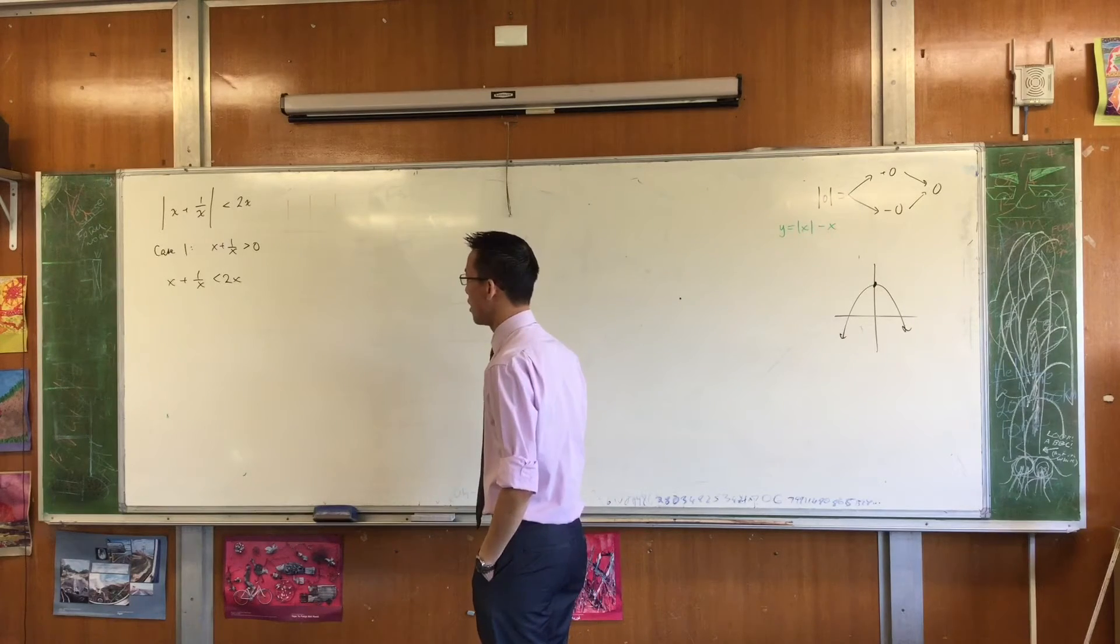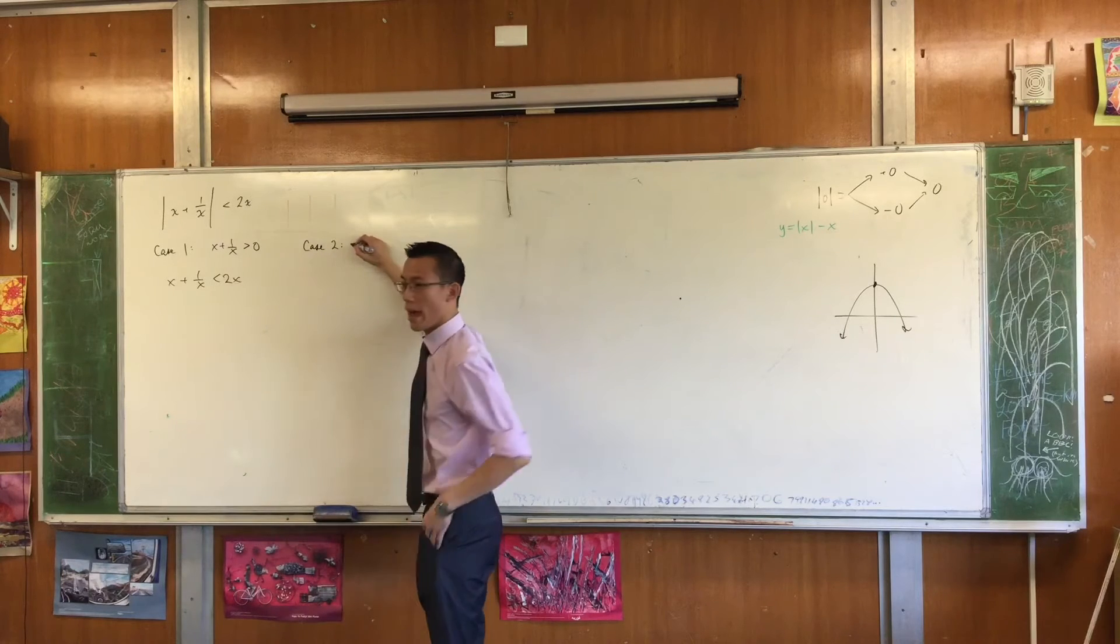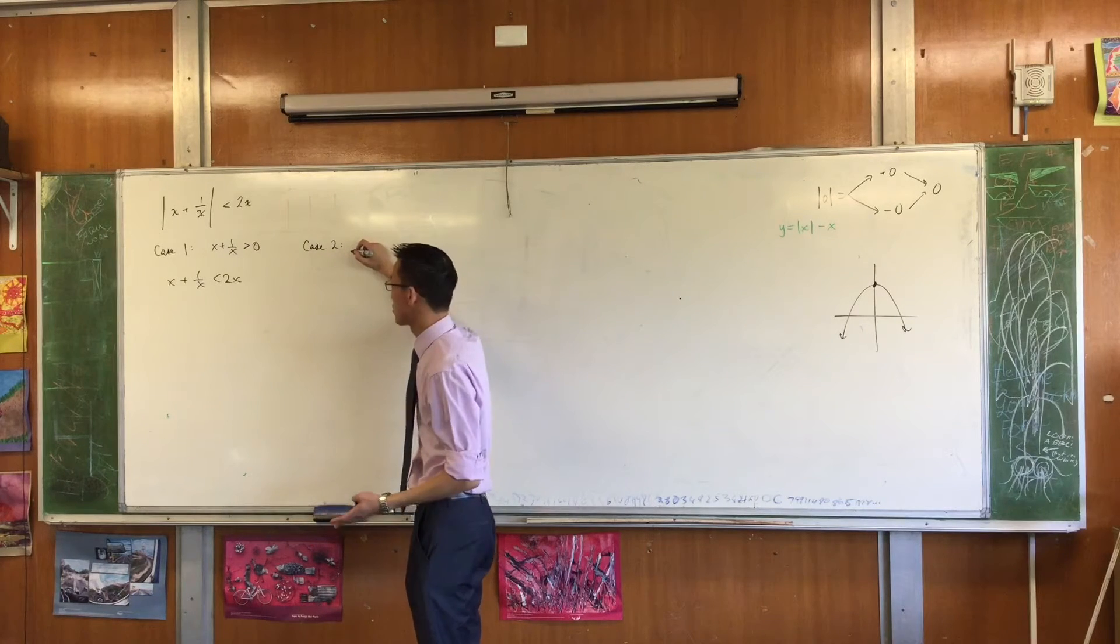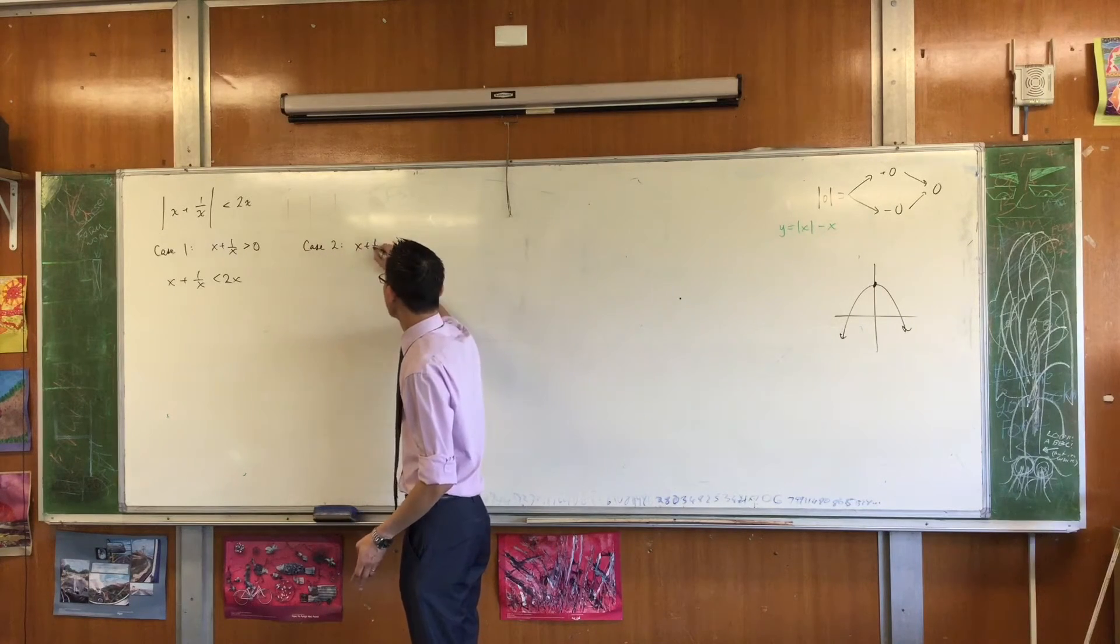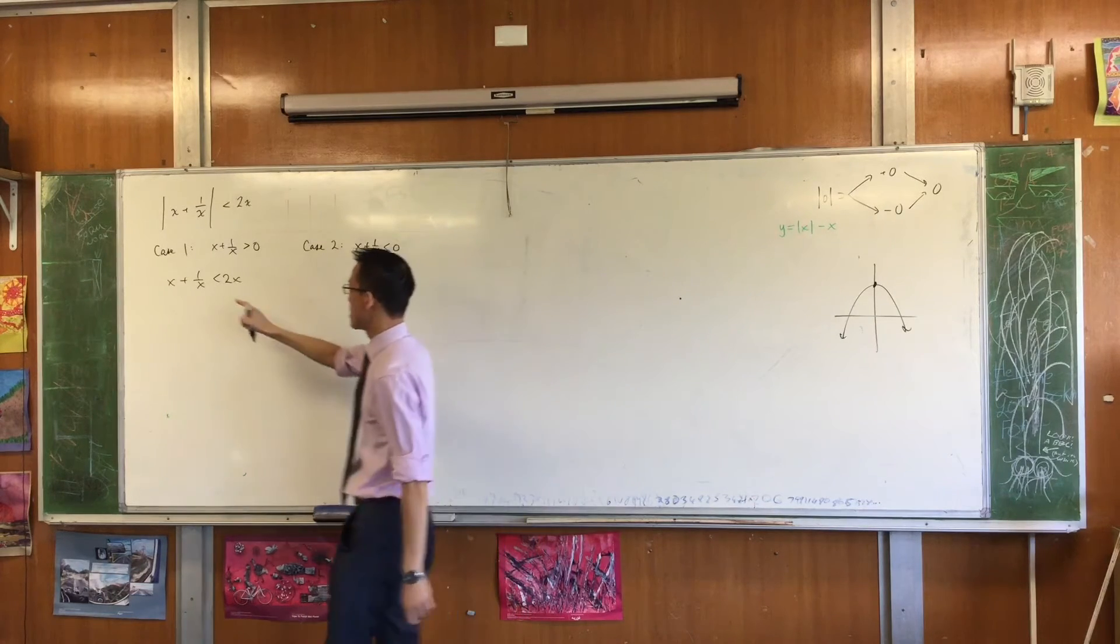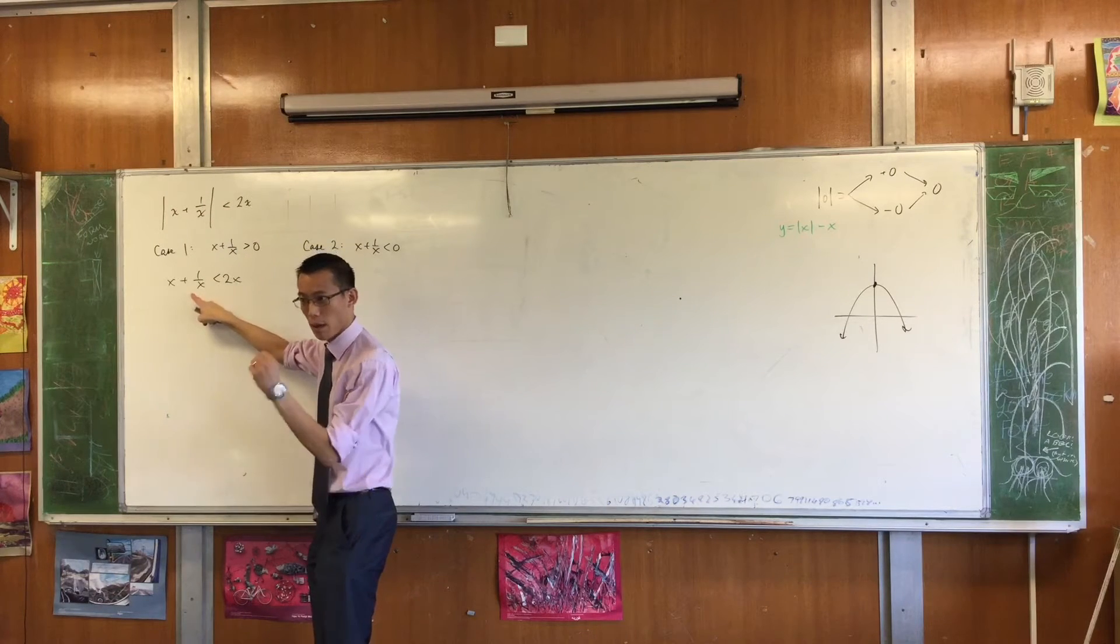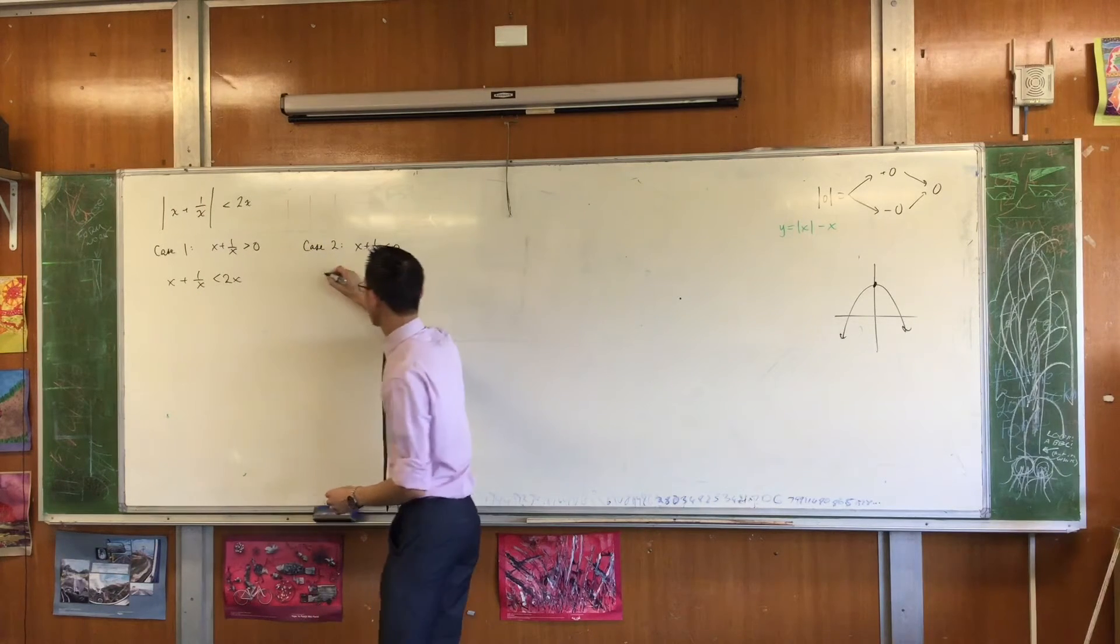Now, there's another case, case two, which is where x plus one on x is not greater than zero, it's where it's negative, okay? And in that case, the absolute value of blah blah is not just that. I have to apply minus signs to the whole thing, okay? So it's going to look like this.